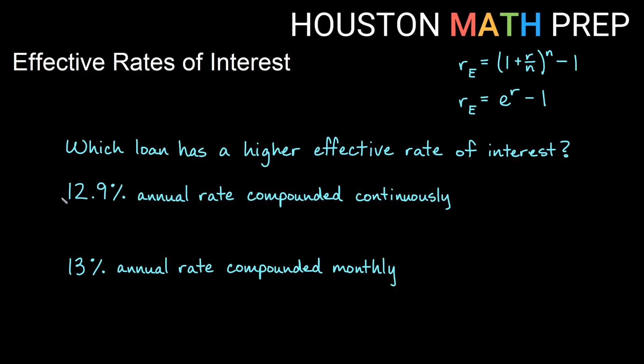So let's go ahead and look at 12.9% annual rate compounded continuously. So compounded continuously tells me that I will use this formula here. You can tell because e to the r is in the a equals pert formula. That's kind of how you can tell this one is the compounding continuously effective rate.